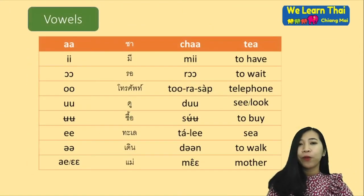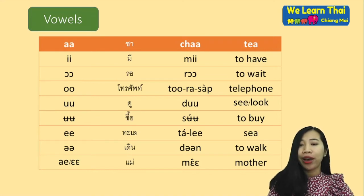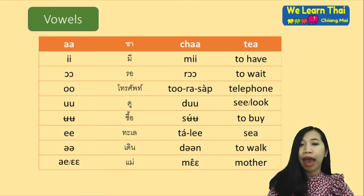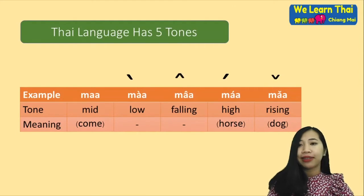For vowels — the long vowels — we have: i, oo, o, uu, u, ee, ue, and ae. You can see the last vowel: we have two types of 'e' vowel.